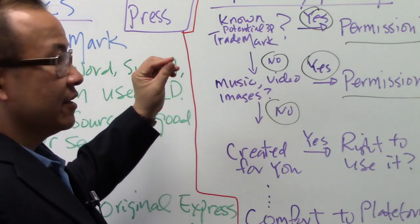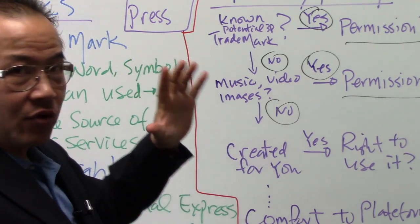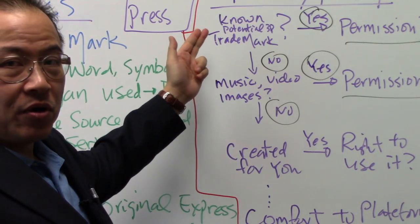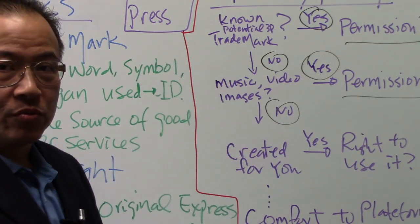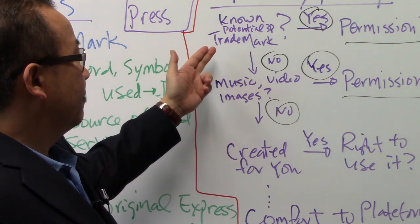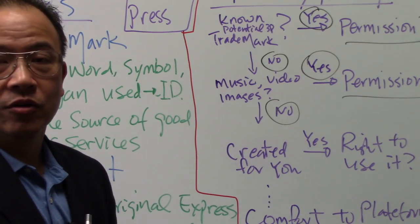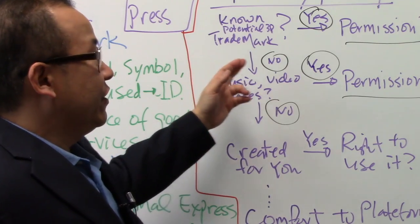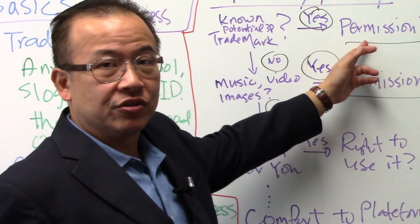So first thing, there are six questions you need to ask yourself. Is there a posting that you're going to put out to promote your product or services? Does that post have known or potential third-party trademark? If yes, do you have permission to use it?